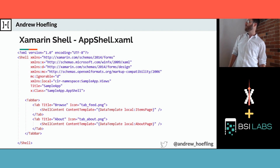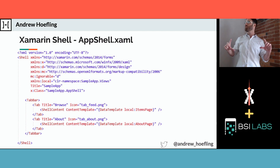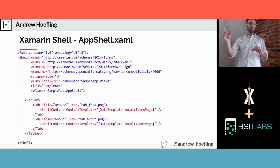Here's what a tab layout looks like in Xamarin Shell. There's a new type of control called tab bar, and you can start creating tabs in it — specifying a browse tab with an image, an about tab with an image. That's all the code you need and it renders two tabs on your page. This is the exact same code from the Xamarin Shell template if you go File > New Project > Xamarin Shell.